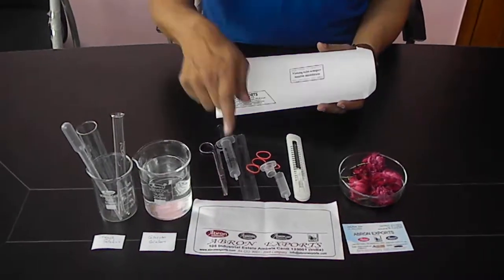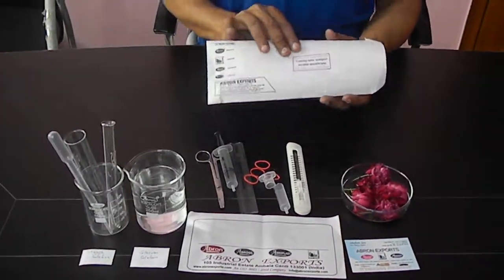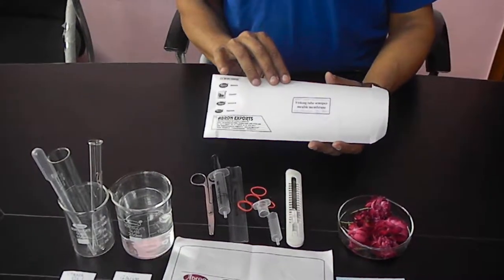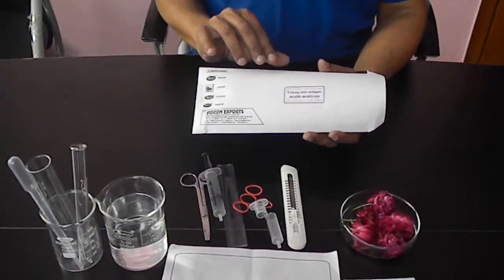This is the whisking tube by Abron Exports. It comes in an envelope, available in 1 meter, 2 meter, 5 meter, and 10 meter lengths.